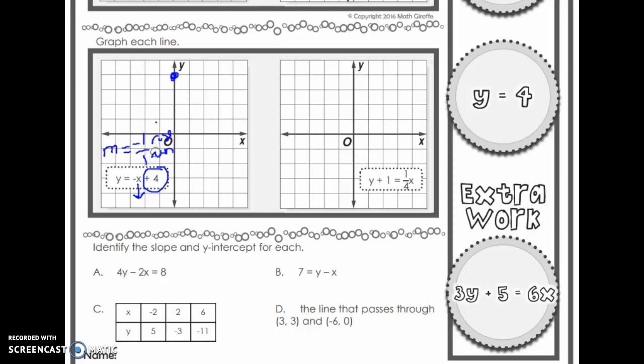But because it's negative, we're not going to rise. We're going to go down. So we're going to go down 1 over 1. That's my next point. Down 1 over 1. Down 1 over 1. Down 1 over 1. And then we connect them.